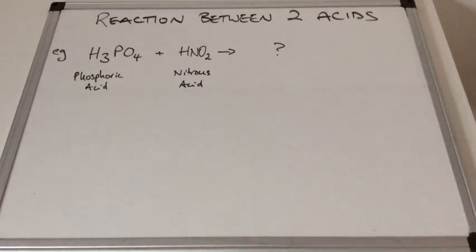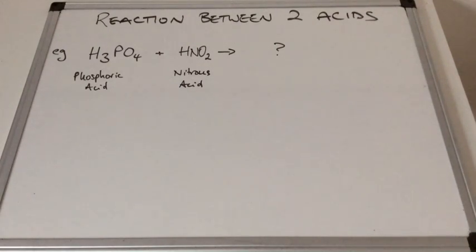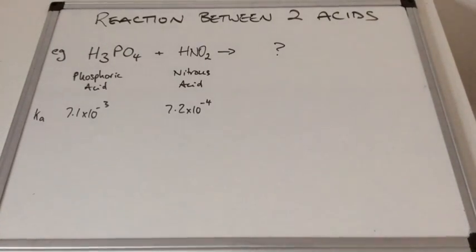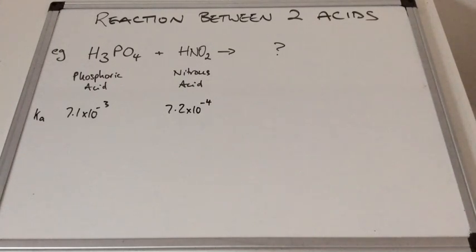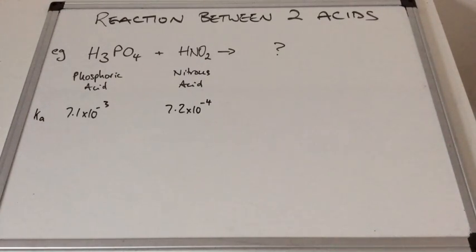To be able to answer the question we need to know the Ka values for these two acids — that's the acid dissociation constant — and these would obviously be supplied in an exam question. So there are the Ka values written underneath the acids. Phosphoric acid has a Ka value of 7.1 times 10 to the minus 3, in moles per decimetre cubed. Nitrous acid is 7.2 times 10 to the minus 4.